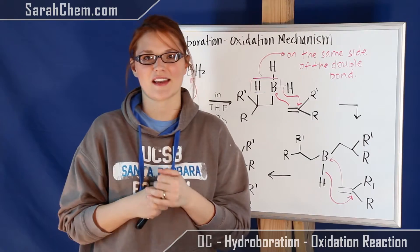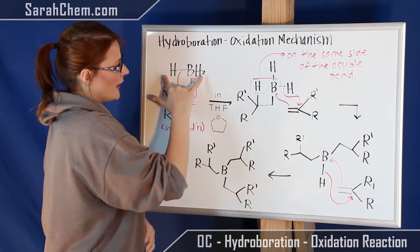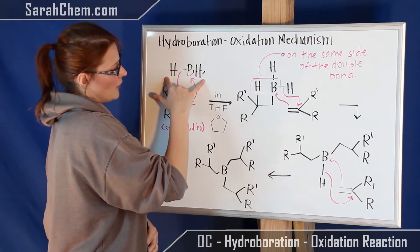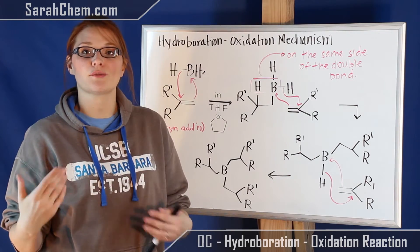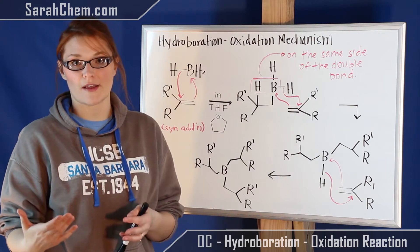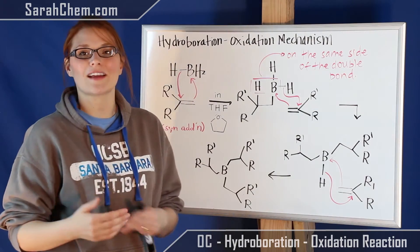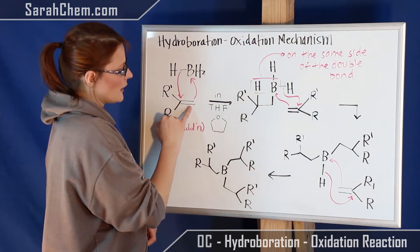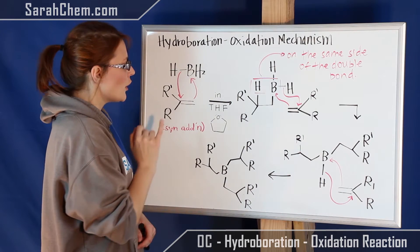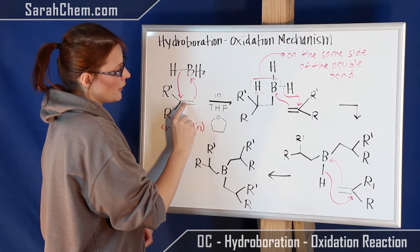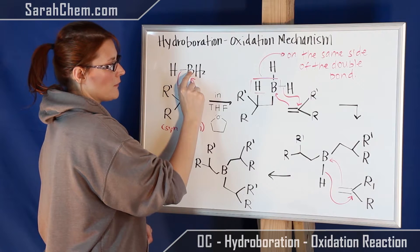Let's take a look. Over here we have our alkene and here we have our BH3. Remember, alkenes are electron rich, so they behave as nucleophiles. We know that the boron is going to be electron deficient, so that's a good attack point. What's going to happen is our pi electrons are going to break and swing up to attack that boron.